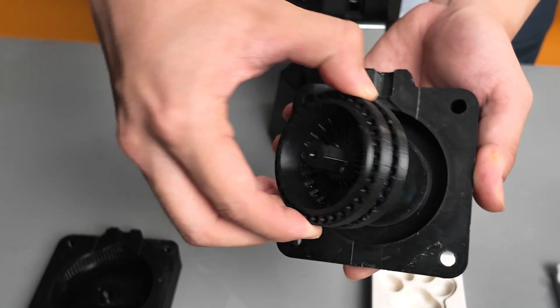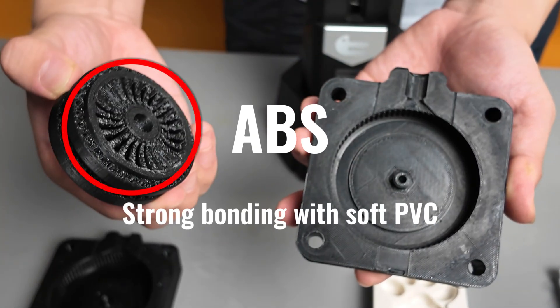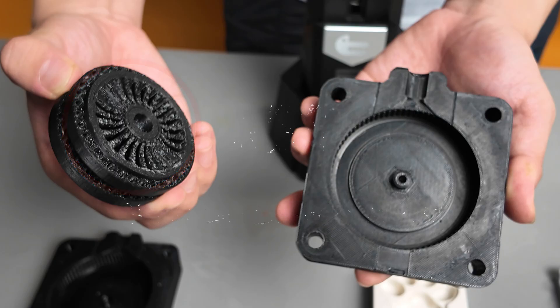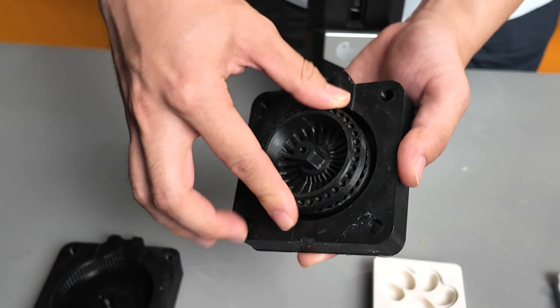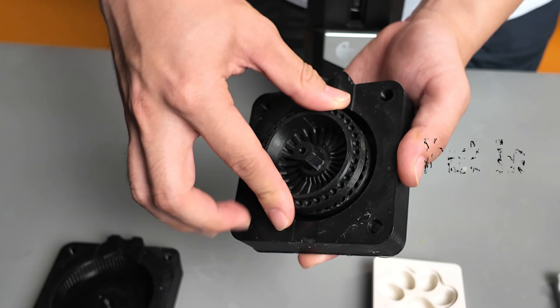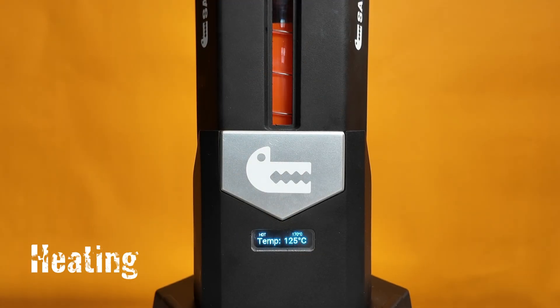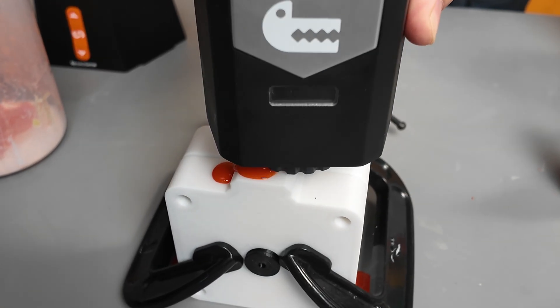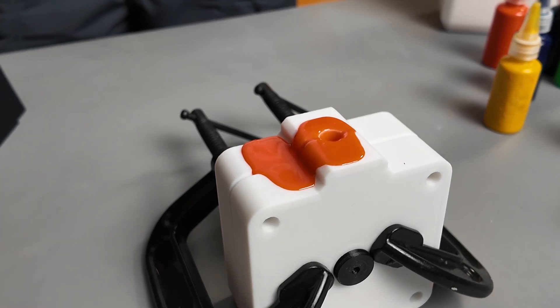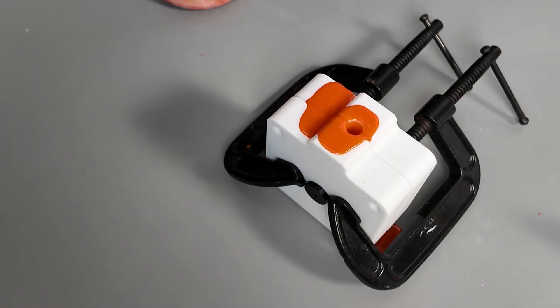First, 3D print the wheel hub using ABS for strong bonding with soft PVC. Then 3D print the mold in PETG and place the hub inside the mold. Heat your soft gel raw material and inject it directly into the mold. Apply steady pressure while injecting to ensure the mold is completely filled.